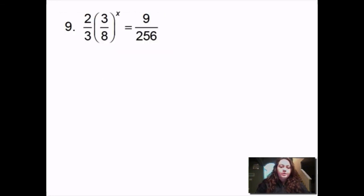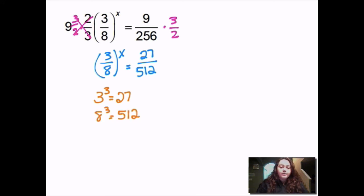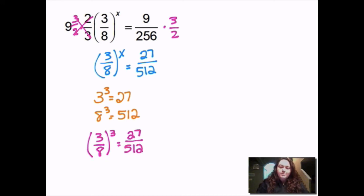This one I have 2/3 times 3/8 raised to the x equals 9 over 256. I have to get rid of that fraction by multiplying by the reciprocal, so I multiply both sides by 3/2. That leaves me with 3/8 to the x equals 27 over 512 — because 9 times 3 is 27 and 256 times 2 is 512. Now, 3 to the 3rd gives me 27, and 8 to the 3rd gives me 512. So 3/8 to the 3rd equals 27 over 512, which means x equals 3.